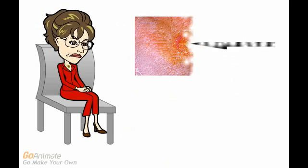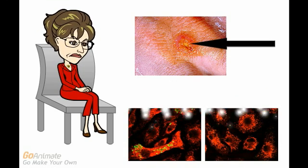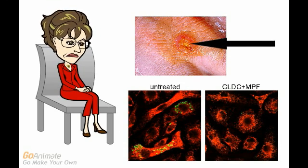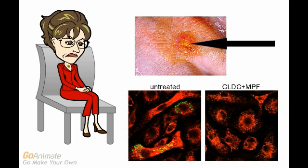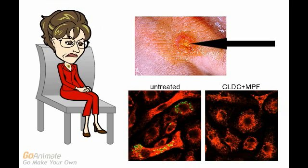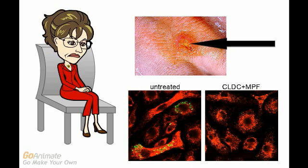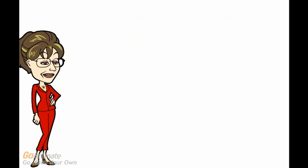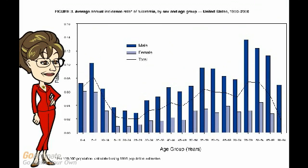Tularemia, or rabbit fever, is an infectious disease caused by the bacterium Francisella tularensis, having such severe symptoms as chills, fever, vomiting, and prostration. A couple of days from the occurrence of these symptoms, an elevated lesion develops in the infected area which later becomes ulcerous. This is the graph of the rate of tularemia.